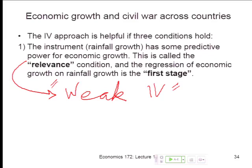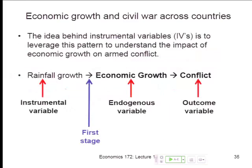When you have IVs much weaker than we have here, you need to use different approaches — the standard instrumental variables approaches don't work anymore. Significance and magnitude matter a lot, and so does the number of instruments. More instruments give you certain advantages but also certain problems. It's a very active branch of theoretical econometrics. Thankfully, we're not in that weak instrument area — we're in a gray area where it's okay to use the standard methods. Our layout: rainfall growth to economic growth to conflict. Instrumental variable to endogenous variable is the first stage; endogenous variable to outcome variable is the second stage.